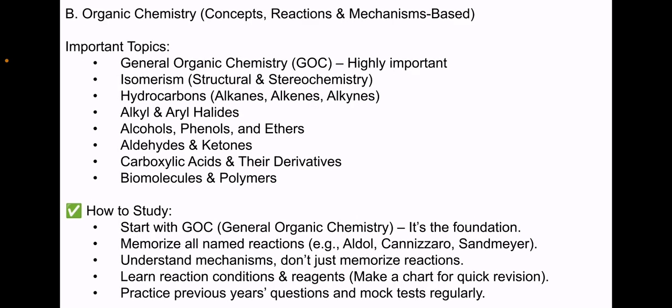Next, for Organic Chemistry, you have to understand the concepts, reactions, and mechanisms, as you will expect these questions from this portion. The important topics from which questions are asked in the organic portion are: First, General Organic Chemistry (GOC) - it's highly, highly important. I suggest you go through this chapter very in-depth. Next is Isomerism, both Structural and Stereochemistry; Hydrocarbons (Alkanes, Alkenes, and Alkynes); Alkyl and Aryl Halides; Alcohols, Phenols, and Ethers; Aldehydes and Ketones; Carboxylic Acids and their Derivatives; Biomolecules; and Polymers.